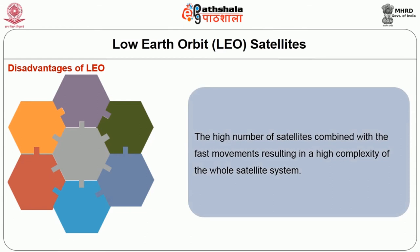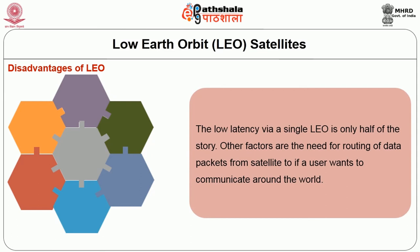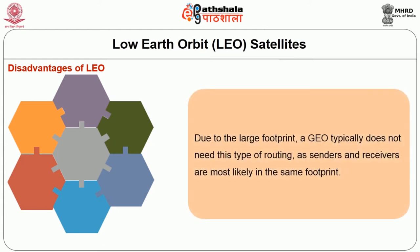The high number of satellites combined with fast movement results in high complexity of the whole satellite system. One general problem of LEO is the short lifetime of about 5 to 8 years due to atmospheric drag and radiation from the inner Van Allen belt. Assuming 48 satellites and a lifetime of 8 years, a new satellite would be needed every 2 months. The low latency via a single LEO satellite is only half of the story — one factor is the need for routing of data packets between satellites if a user wants to communicate around the world. Due to the large footprints, a GEO satellite typically does not need this type of routing as sender and receivers are most likely in the same footprint.